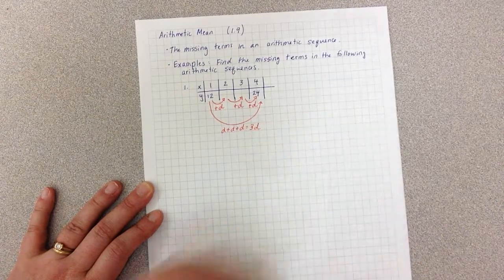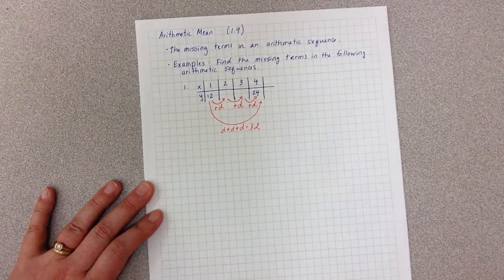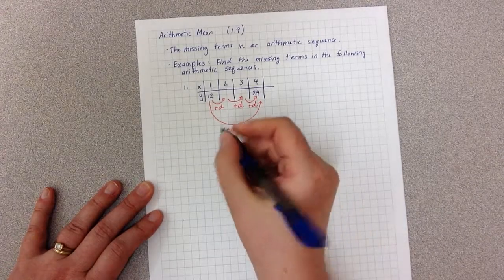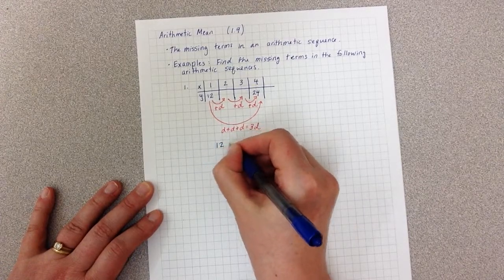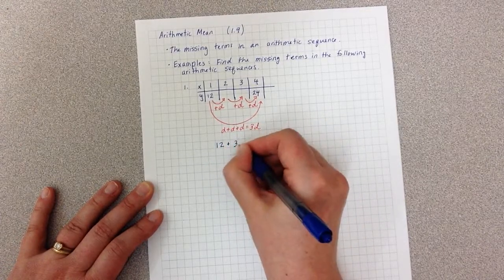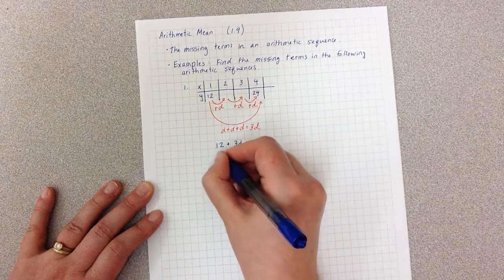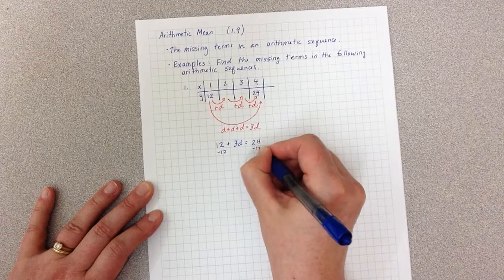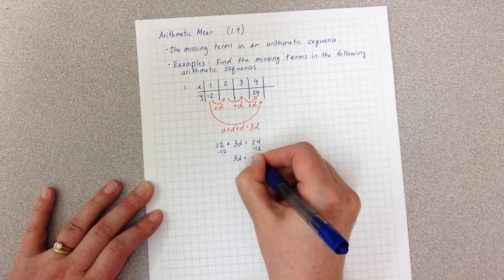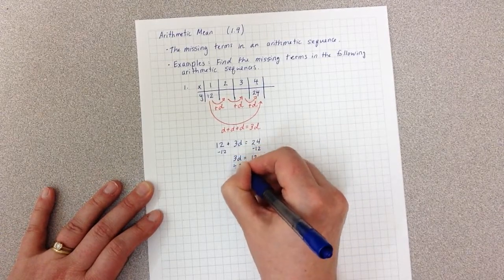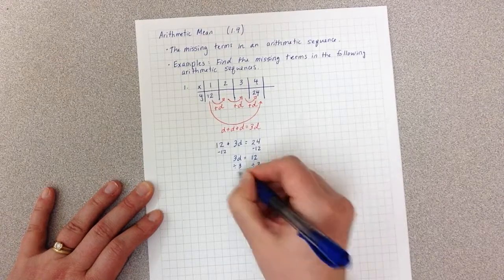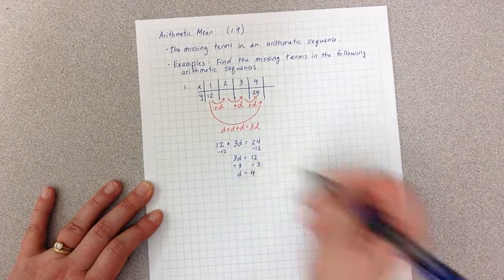which is I'm adding D three times. So that is 3D, which means I can now write an equation. 12 plus 3D equals 24. I'm going to solve this by subtracting 12 on both sides, dividing by 3 on both sides, and I have that D equals 4.